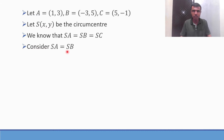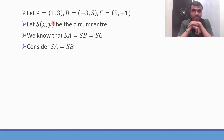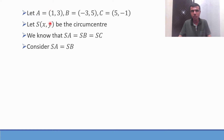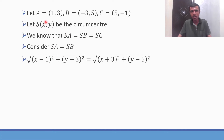Consider SA = SB. SA is the distance between points S and A, using the distance formula: under root of (X2 minus X1) whole square plus (Y2 minus Y1) whole square. So SA = under root of (X minus of minus 3) whole square plus (Y minus 5) whole square, which gives us (X plus 3) whole square plus (Y minus 5) whole square.